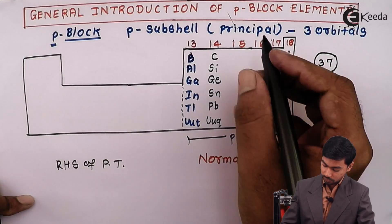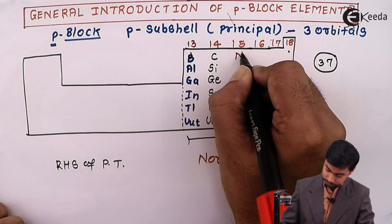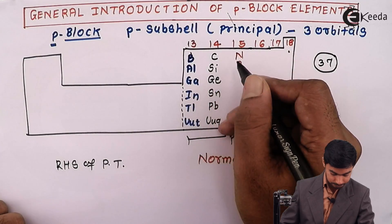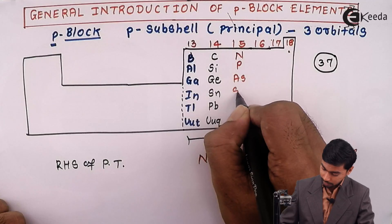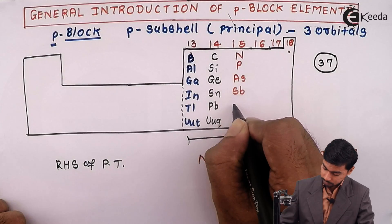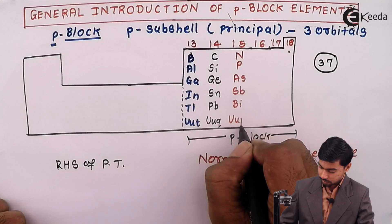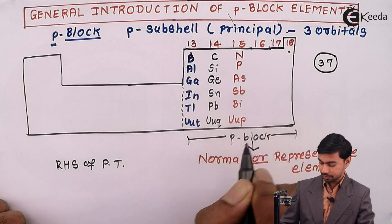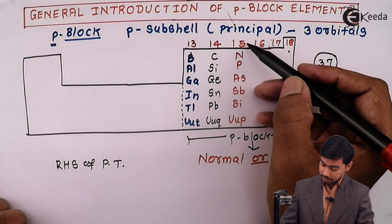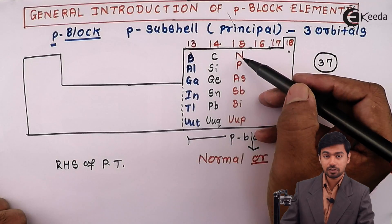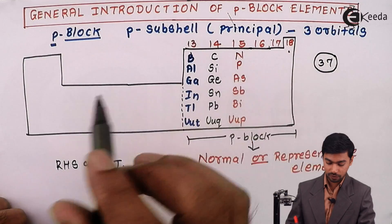The elements of group 15 are Nitrogen, Phosphorus, Arsenic, Antimony, Bismuth, and Ununpentium. Since the elements of group 15 start with the element Nitrogen, this group is called the Nitrogen family.